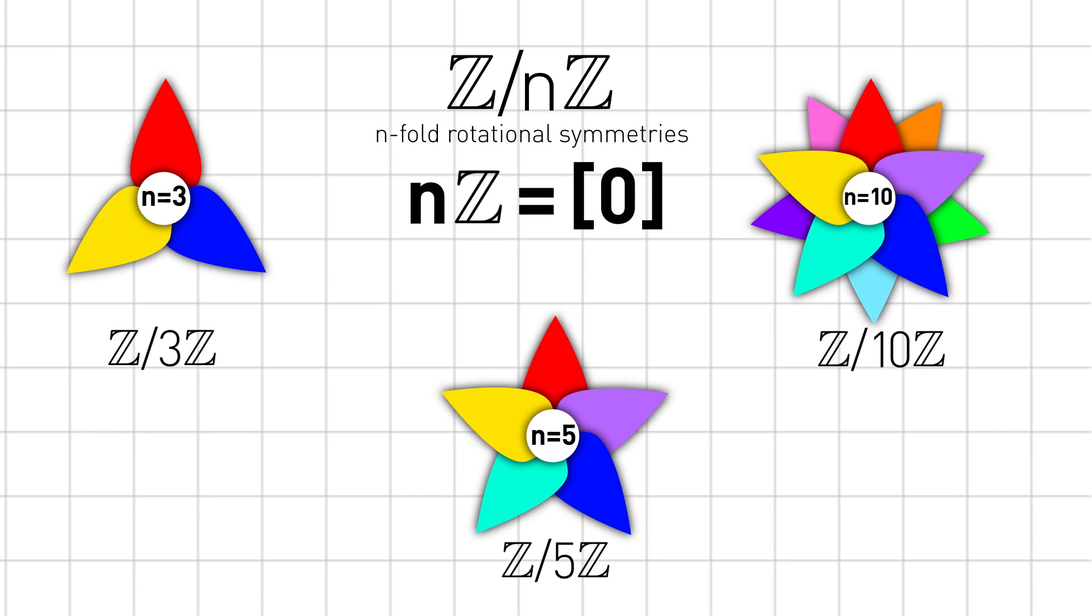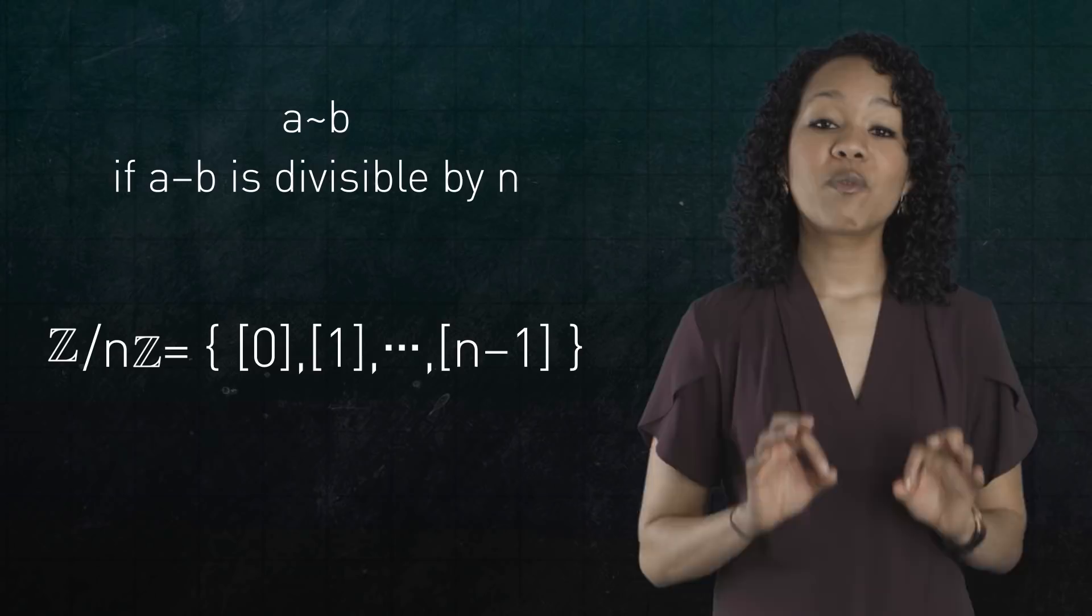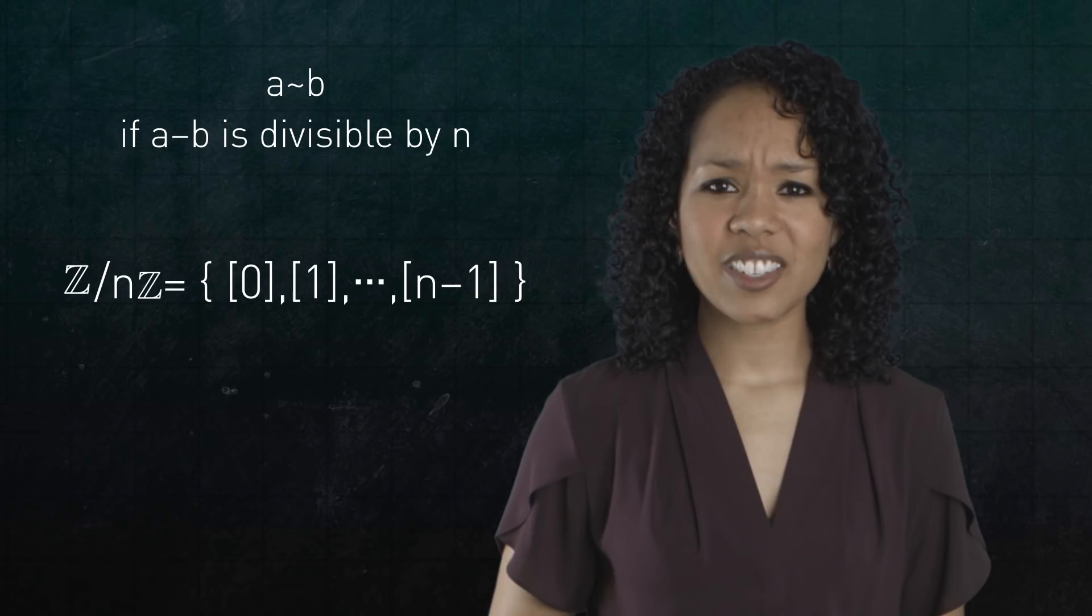By the way, this is the beginning of group theory, which we'll cover in an upcoming episode. So how do you divide by 0? You write down an equivalence relation and form the quotient set. And the idea of quotienting extends far beyond the integers.